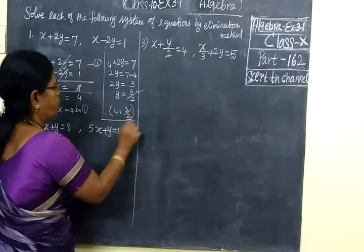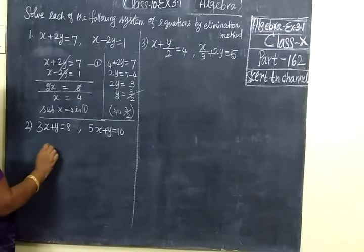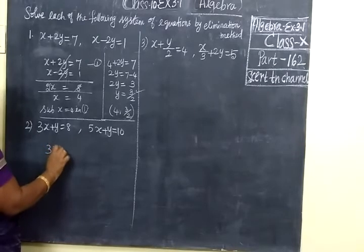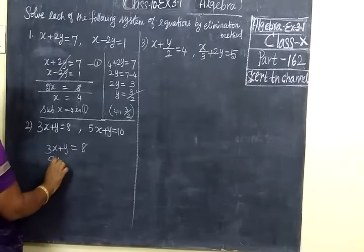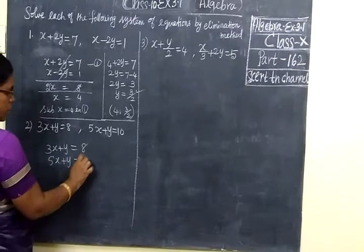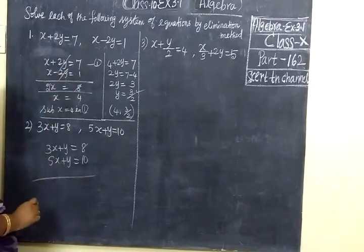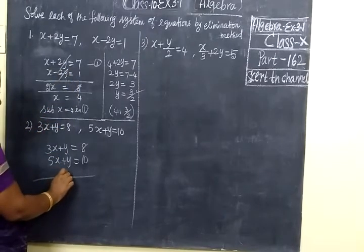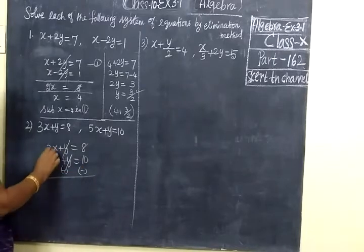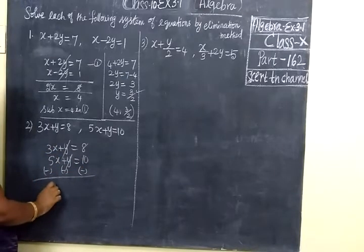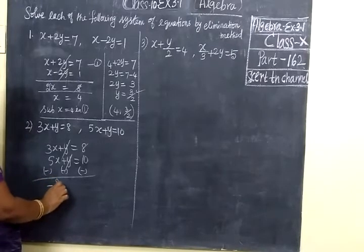Now we go to the second problem. Write the equations one by one: 3x plus y equal to 8 — equation 1. Then 5x plus y equal to 10 — equation 2. Now we change the sign of equation 1 to eliminate y. We change the sign here: minus, minus, minus — the y terms cancel. So 5x minus 3x gives 2x.